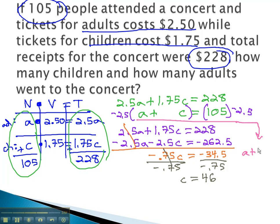a plus c, which we just found out was 46, equals 105. Subtracting 46 from both sides, we find out a, or the number of adults, is 59.